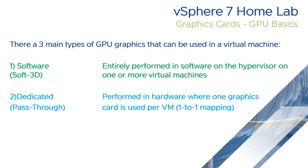The next one is a dedicated graphics card or pass-through, and what we do is we use the PCI bus to pass through an individual device to an individual VM. So this is a hardware one-to-one mapping — one PCI card in the server can be passed through to one virtual machine as a dedicated pass-through.